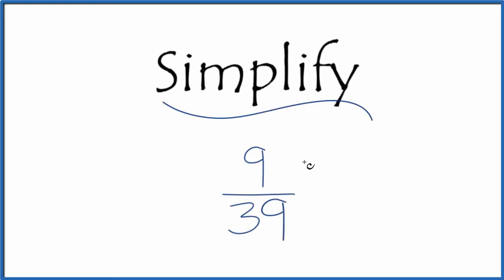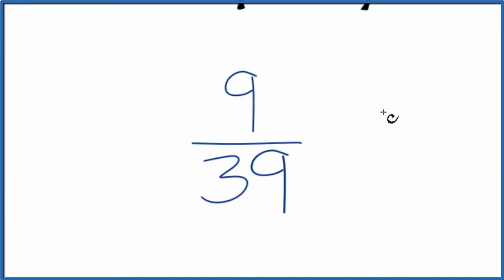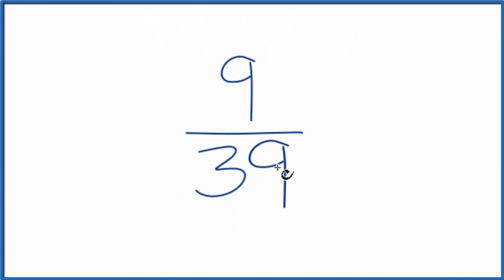If you need to simplify the fraction 9/39, here's how you do it. We're looking for another fraction that's equivalent, has the same value as 9 divided by 39; it's just in lowest terms, we've simplified it.